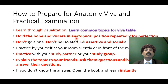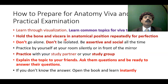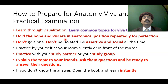Hold the bone and viscera in anatomical position repeatedly for perfection. Sometimes people have a very hard time holding the viscera or bone in anatomical position — how to hold the liver, how to hold the kidney, which kidney is a bit up or down, how to hold the pelvis. Also know how to determine the side: the left clavicle from the right, the left fibula from the right, what is the upper end and what is the lower end. Practice from the very beginning.